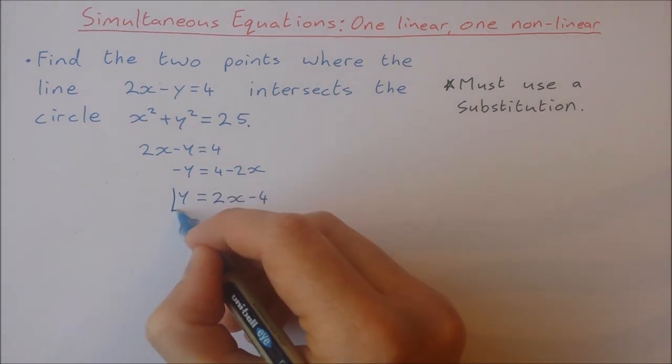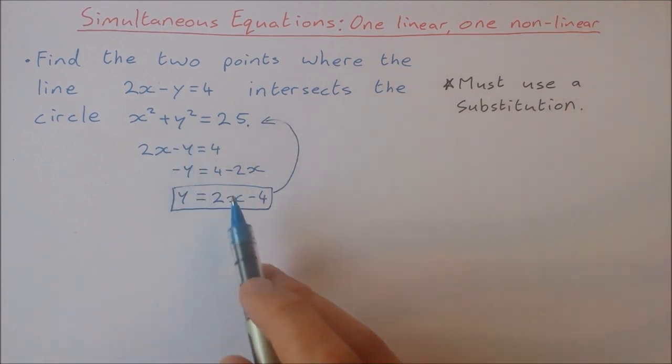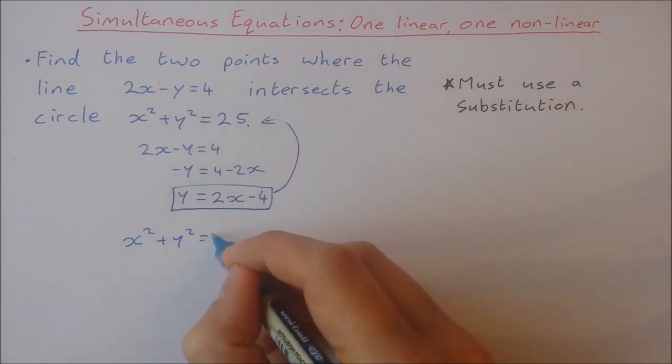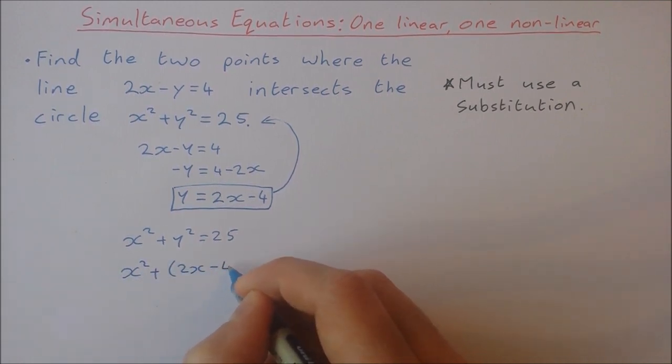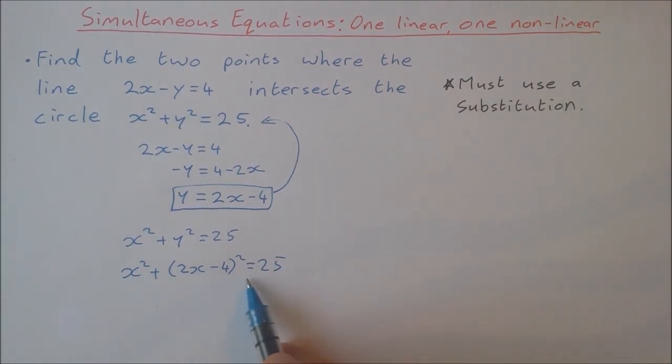I'm going to substitute this into my equation for the circle. Instead of y I'm going to write 2x minus 4. So x squared plus y squared equals 25, I'm going to now write 2x minus 4 instead of y. So x squared plus (2x minus 4) squared equals 25. Now I have an equation with only one unknown. It's a quadratic equation and I'm going to get two values for x from this quadratic.